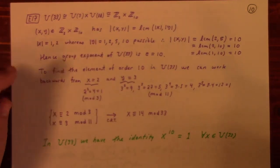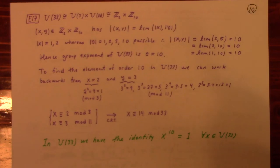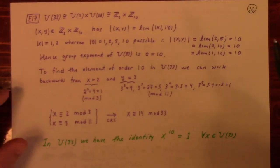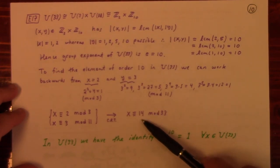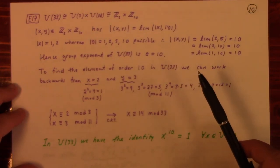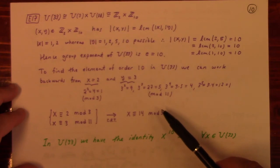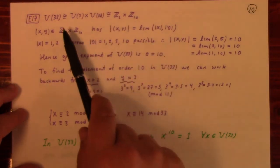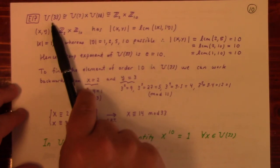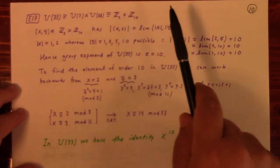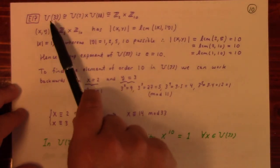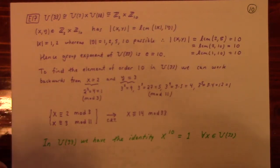Note: the order of U_33 is 20, yet the element of largest order is only 10. So you can't find one element that generates all of U_33 — it's not cyclic. But this is still a useful identity, as we shall see when we study RSA encryption.